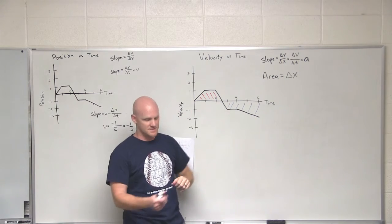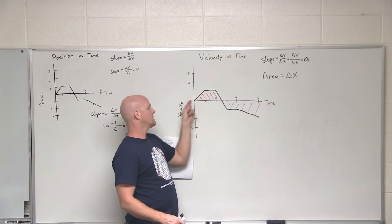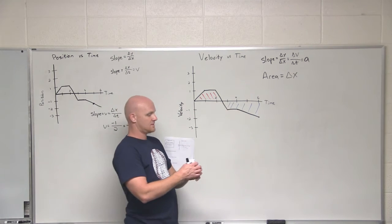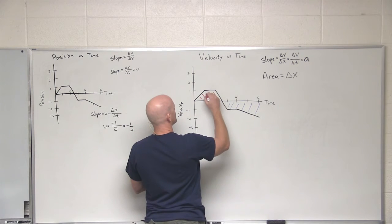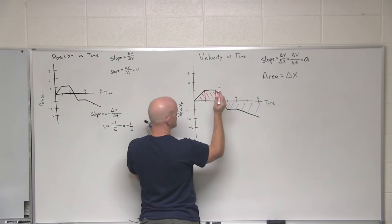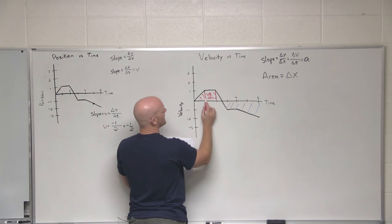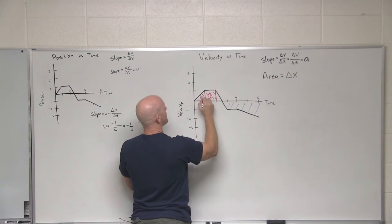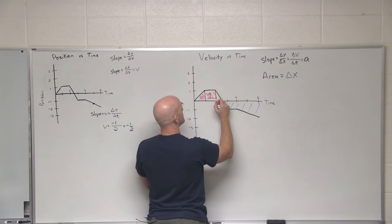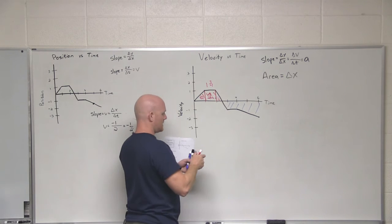On a velocity versus time graph, slope gives acceleration and area gives displacement. The first question asks for net displacement after six seconds. Things above zero on the y-axis represent positive displacement, below zero is negative. Breaking the positive region into shapes: a square of area one (1×1), a triangle of area one half (½×1×1), and a smaller triangle of area one quarter (½×1×½) — giving total positive displacement of one and three quarters.